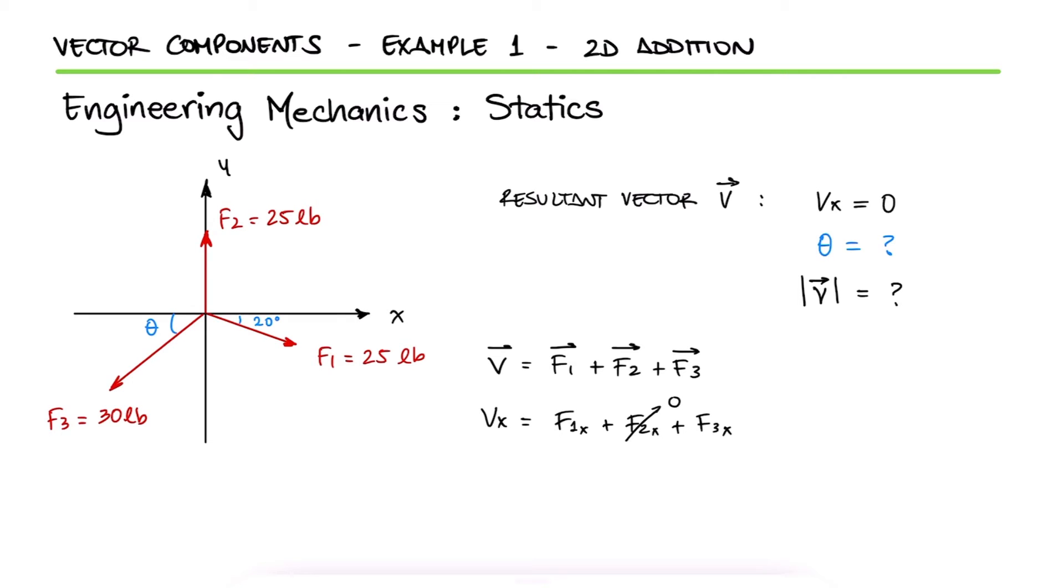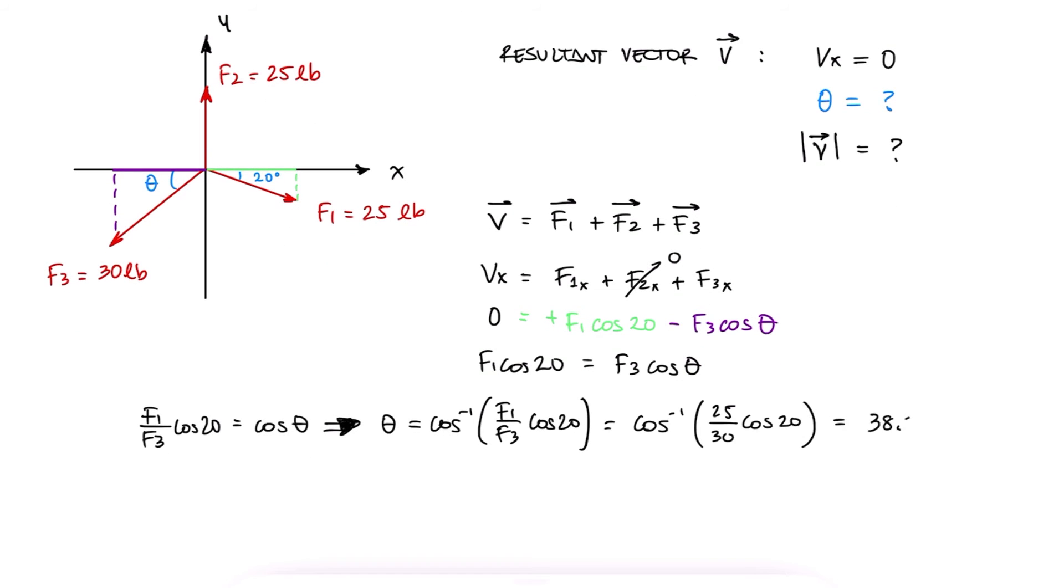The component of f1 will be the positive value of f1 cosine of 20, and the component of f3 will be the negative value of f3 cosine of theta because this component is pointing in the negative x direction. Since we want that horizontal component of the resultant vector to be zero, we can solve for theta and substitute the values to find that angle for f3.